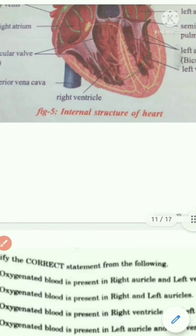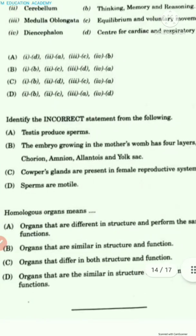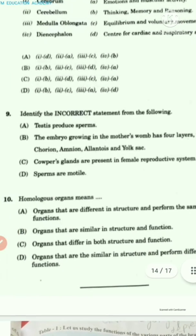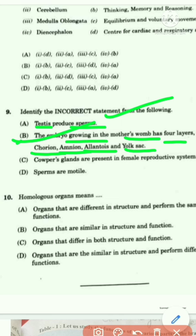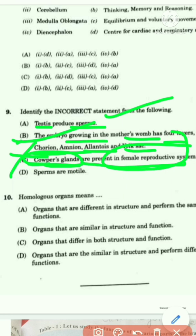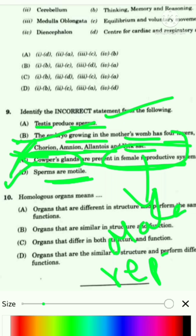Question nine asks to identify the incorrect statement. Testis produces sperm — true. The embryo growing in the mother's womb has four layers: chorion, amnion, allantois, and yolk sac — true. Option C states Cowper's glands are present in the female reproductive system — this is false, they are not in the female reproductive system. Option D states sperms are motile — true. So the incorrect statement is Option C.